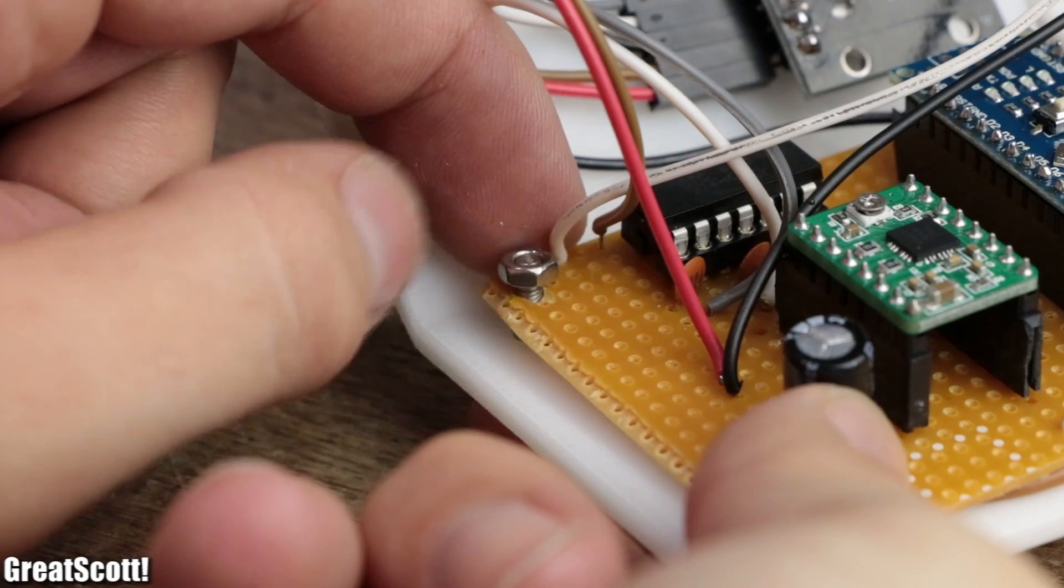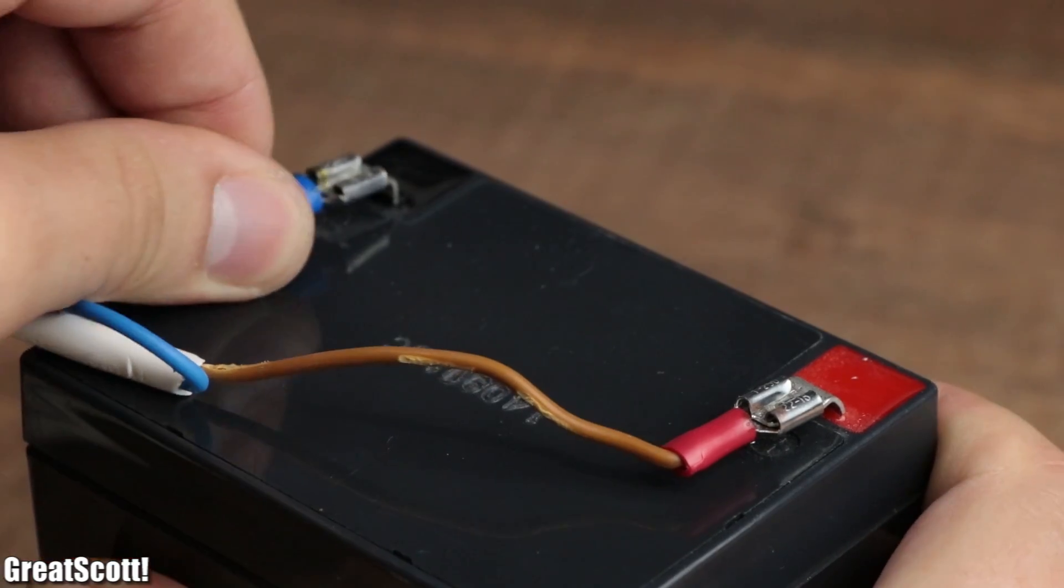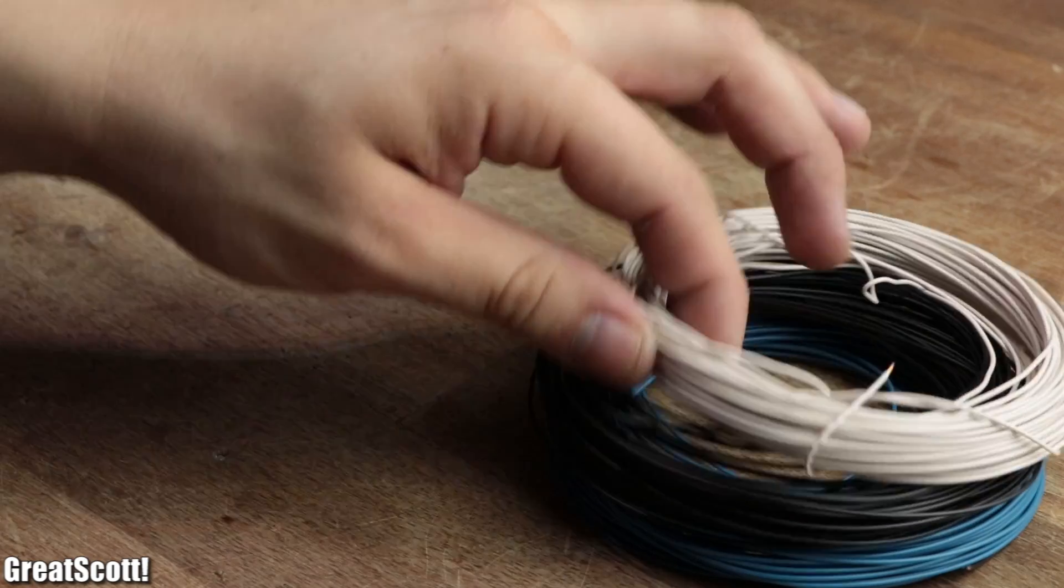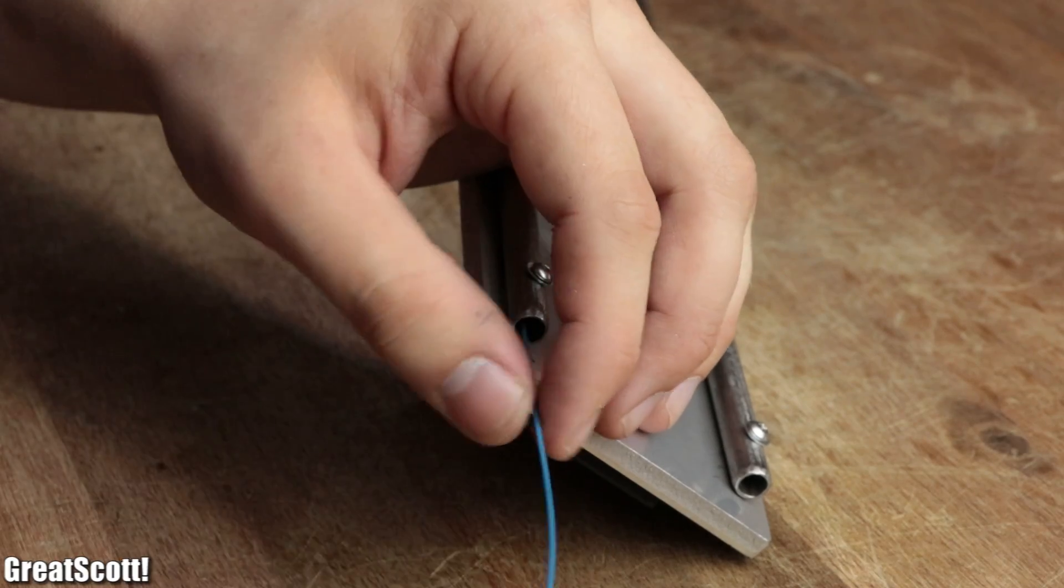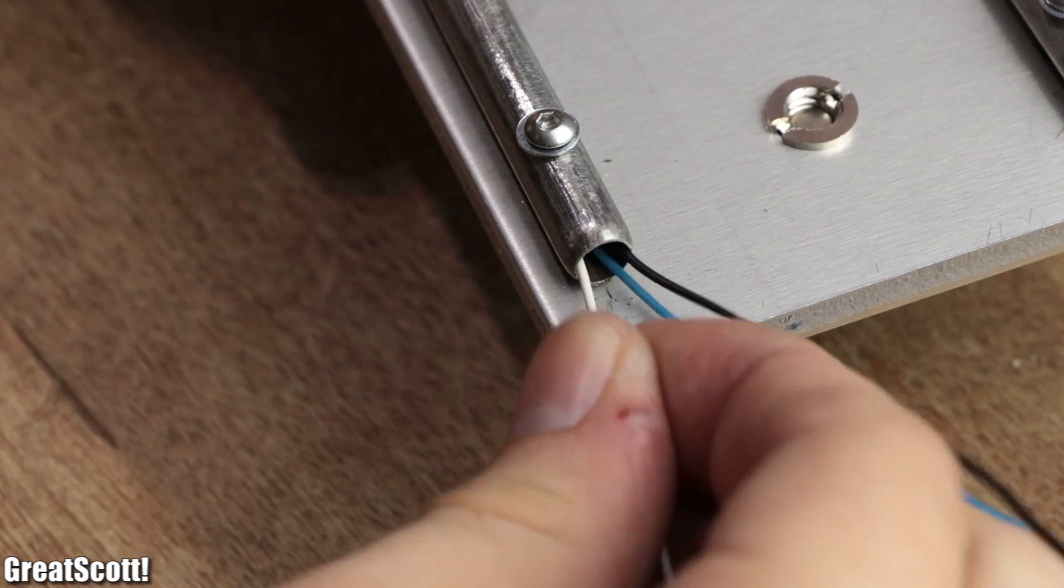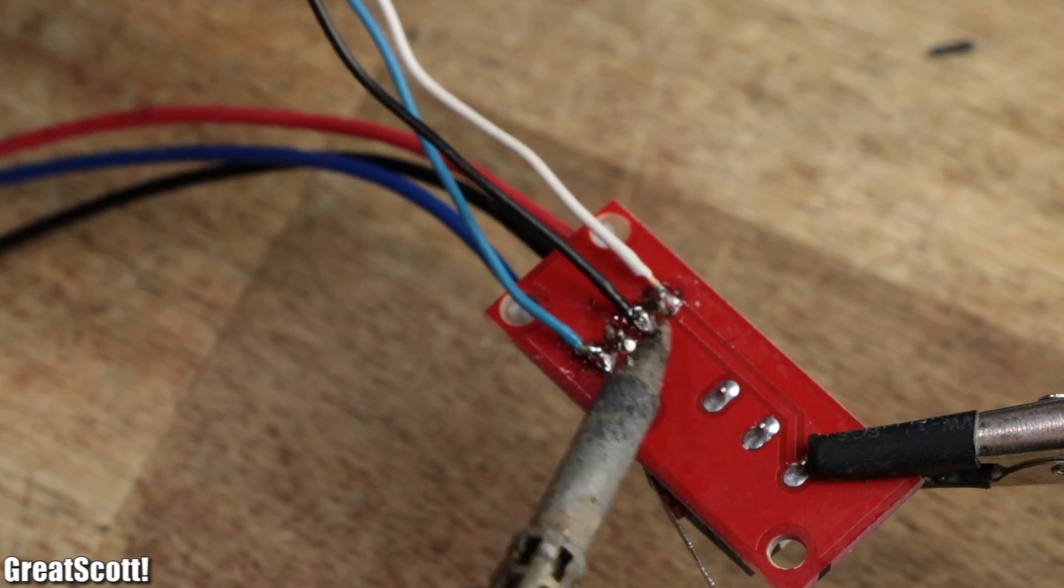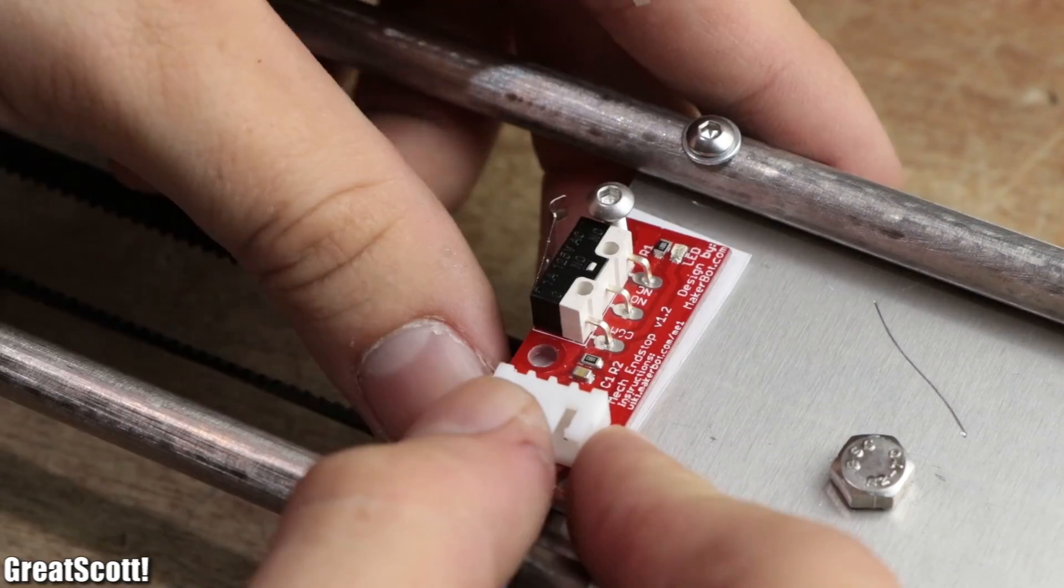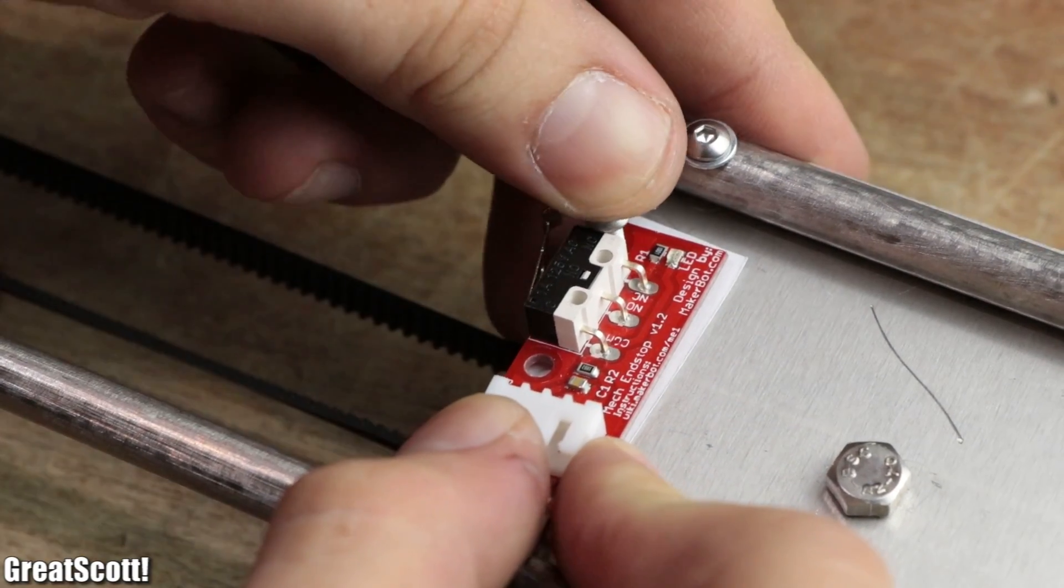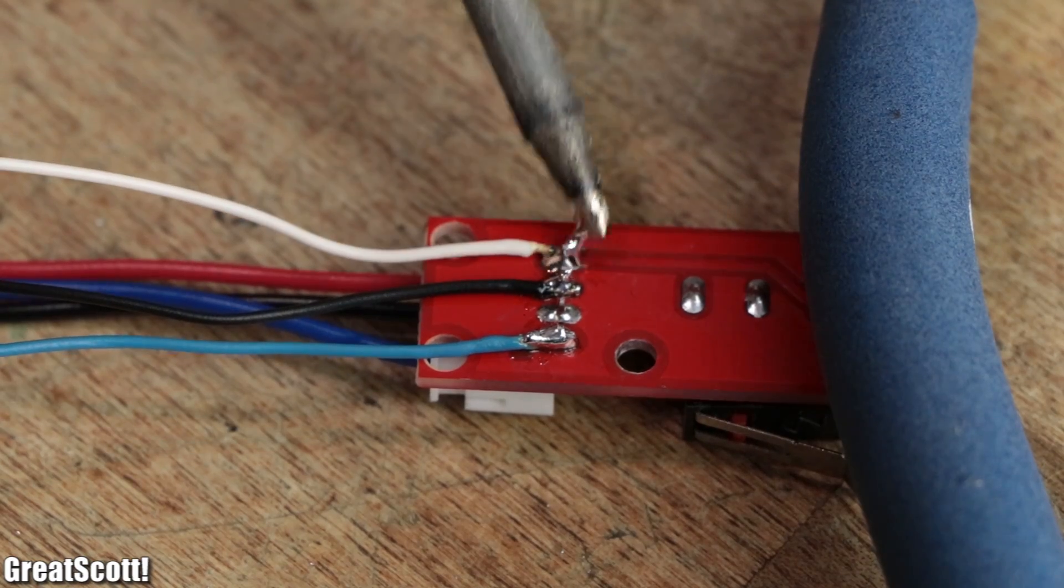Since the first power-up of the circuit was successful, it was time for the wiring of the limit switches. For that I simply pushed three thin stiff wires through one pipe, soldered them to the underside of one limit switch, used a piece of paper as an insulator between the aluminum and the solder joints, and secured it all with bolts and nuts.